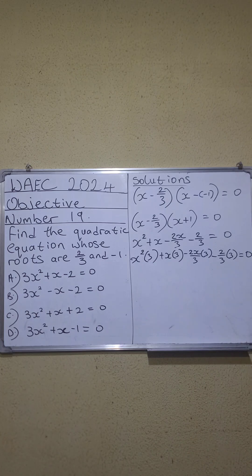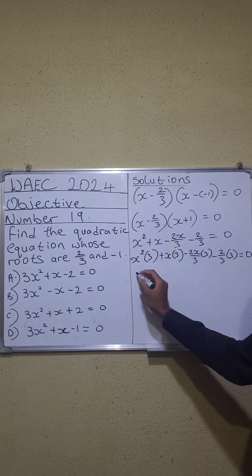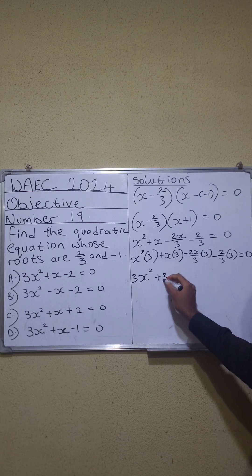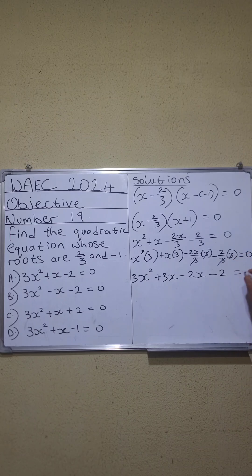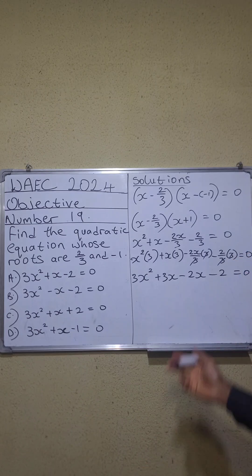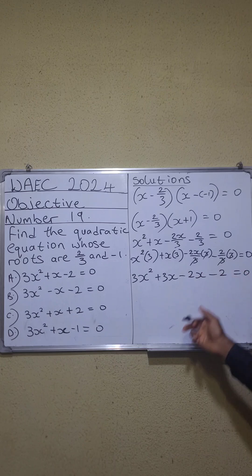Because 0 times 3 will still give you 0. This becomes 3x squared plus 3x. This will cancel this. The left is minus 2x. This will cancel this. And this becomes minus 2 equal to 0. As you can see, we've eliminated these denominators.